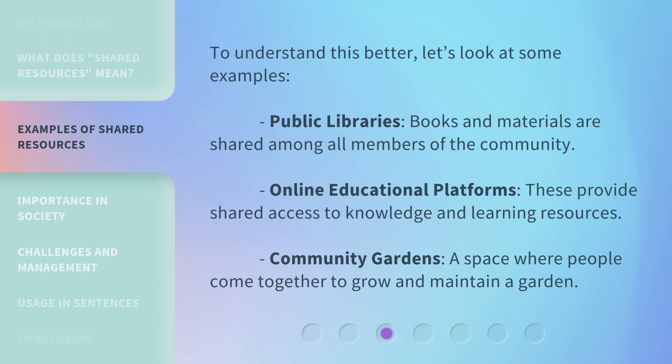To understand this better, let's look at some examples. Public libraries: books and materials are shared among all members of the community. Online educational platforms: these provide shared access to knowledge and learning resources. Community Gardens: a space where people come together to grow and maintain a garden.